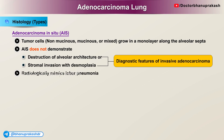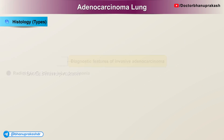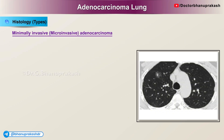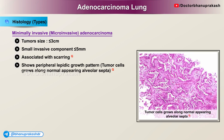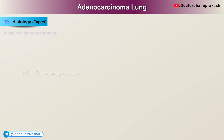Radiologically, adenocarcinoma in situ mimics lobar pneumonia. Minimally invasive adenocarcinoma has a tumor size of 3 cm or less with a small invasive component of 5 mm or less. It is associated with scarring and shows a peripheral lepidic growth pattern, where tumor cells grow along normal-appearing alveolar septa. Most but not all of these lesions are non-mucinous. The prognosis is good.